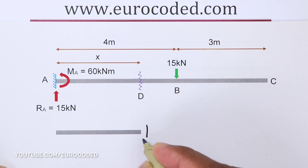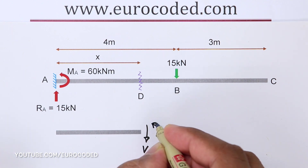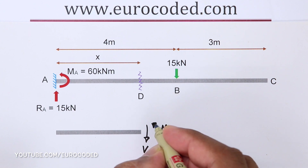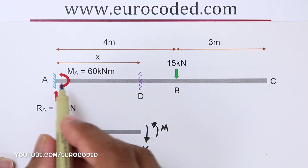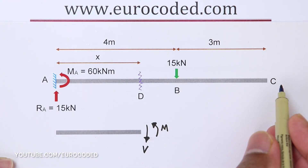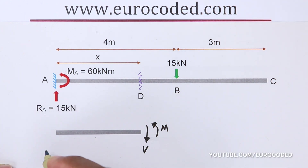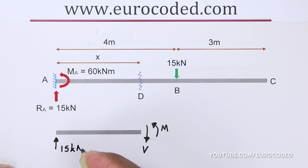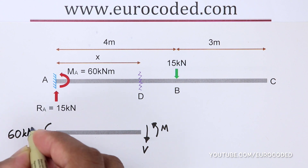So we have a shear force at this cut. Typically the shear force is noted as V or F. In this case I'm going to note the shear force as V, and then we have a bending moment — let's note that as M. There is no axial force at this imaginary cut because there are no externally applied horizontal forces acting on this cantilever beam. Then we have these reaction forces acting on this beam section: a vertical force of 15 kN and a bending moment equal to 60 kNm.